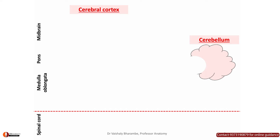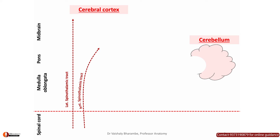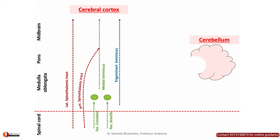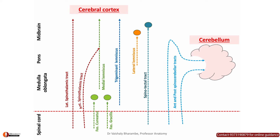Ascending from the spinal cord to the cerebral cortex carrying pain and temperature is your lateral spinothalamic tract. Carrying touch and pressure is your anterior spinothalamic tract. Carrying fine touch, two-point discrimination, vibration sense through the medial lemniscus are the dorsal column tracts. Carrying conscious and unconscious proprioception from the head and neck region is your trigeminal lemniscus, and auditory stimuli via the lateral lemniscus. Coordinating body movements with head and eye movements is your spinotectal tract, and the anterior and posterior spinal cerebellar tracts inform the cerebellum about body position unconsciously.